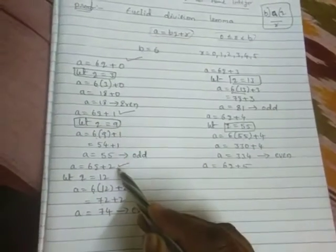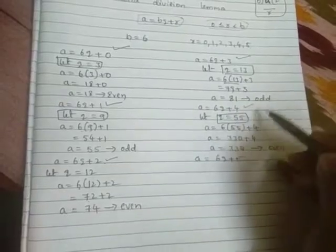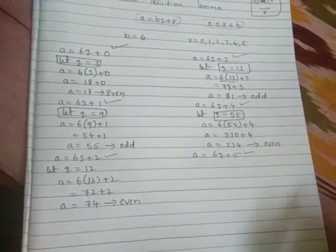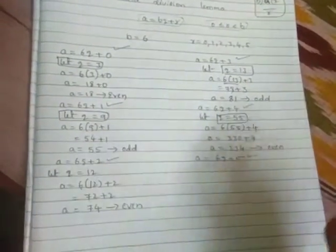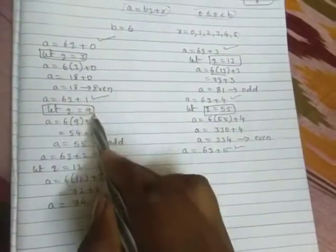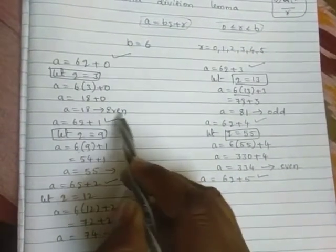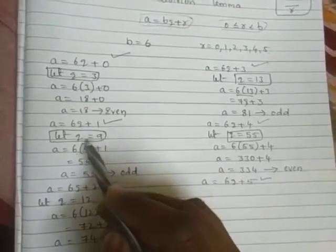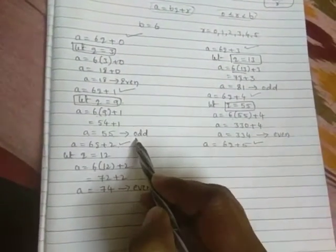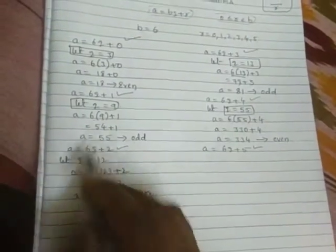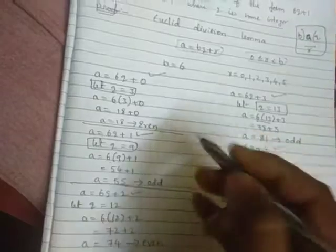6q+0, 6q+1, 6q+2, 6q+3, 6q+4, 6q+5. Now in these I am substituting. You only said these values. If I substitute q = 3, I got 18 and this is even. If I substitute q = 9, I got 55, this is odd.